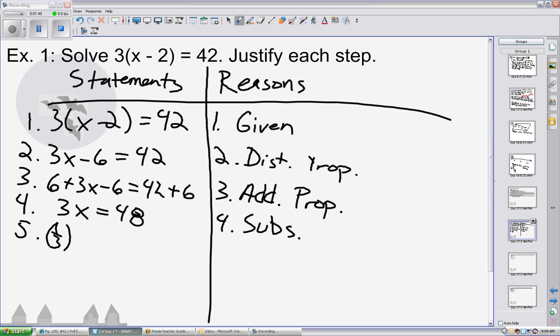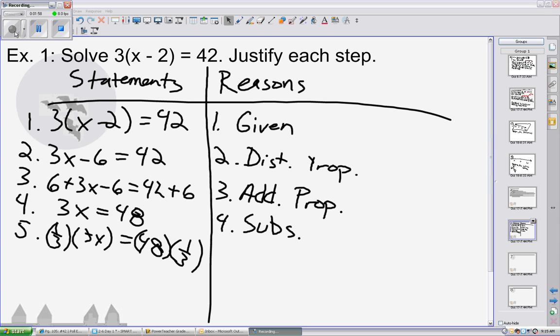From here, we would have to solve for x by multiplying both sides by 1 over 3. This is the multiplication property.